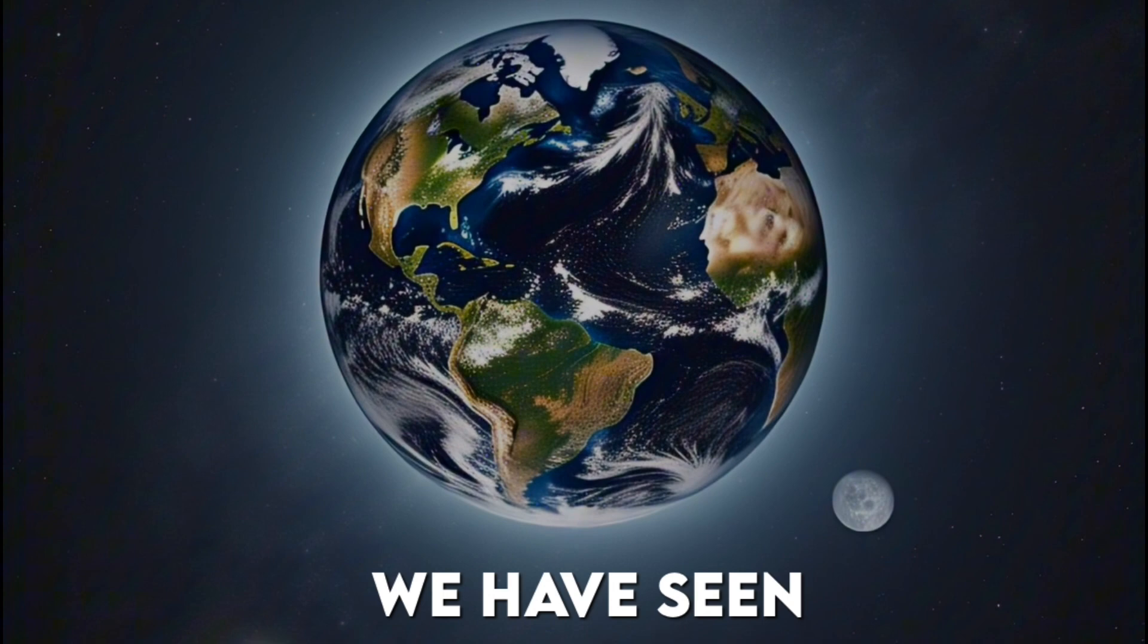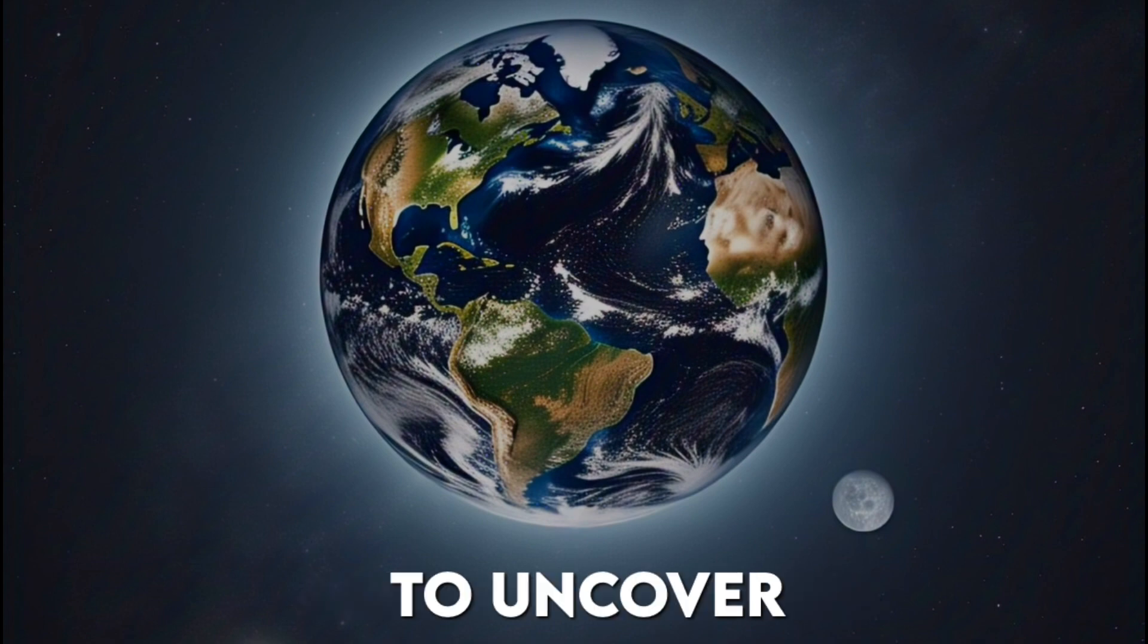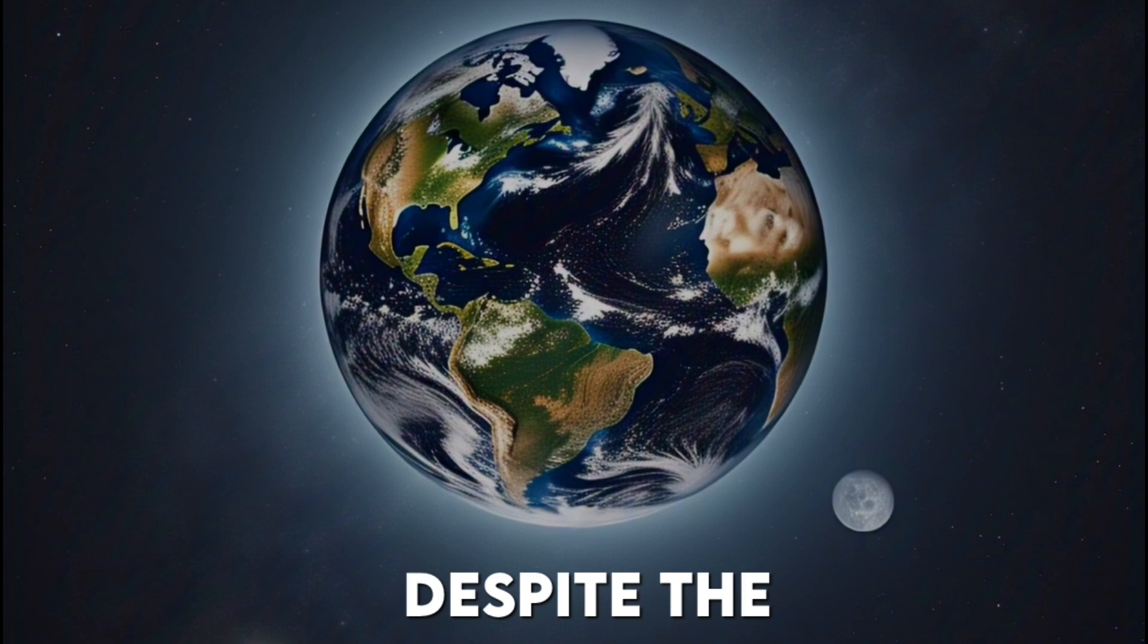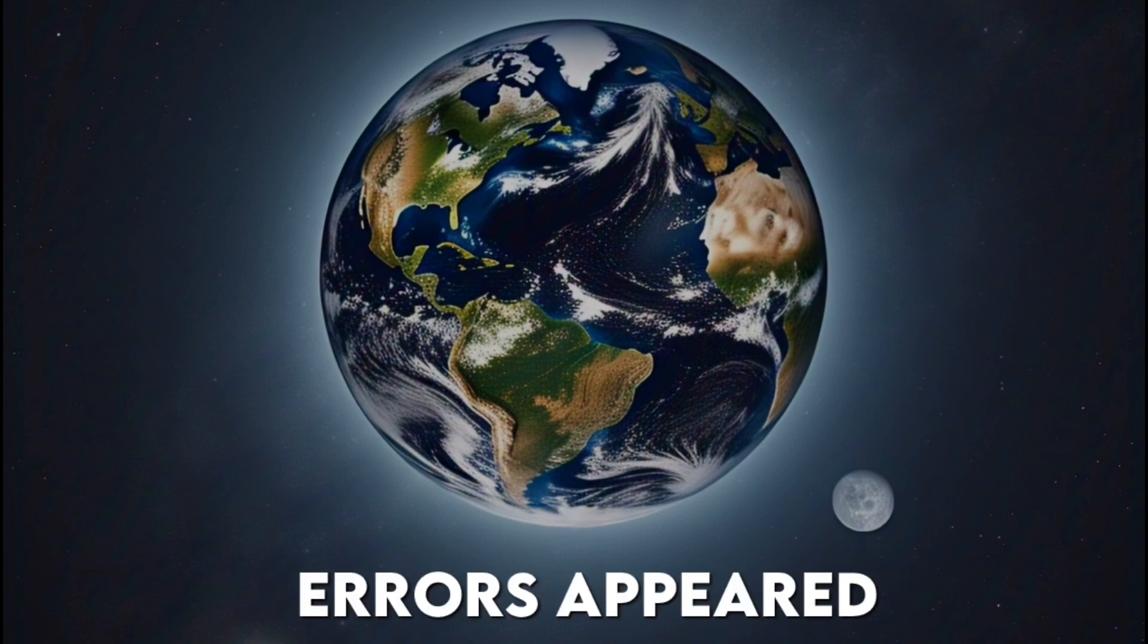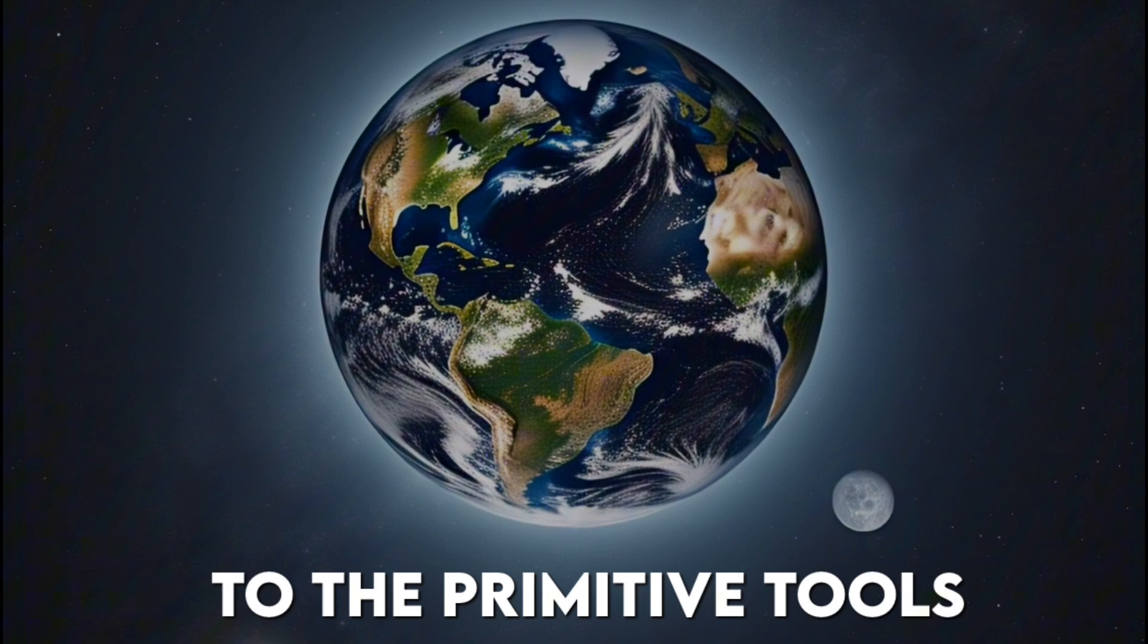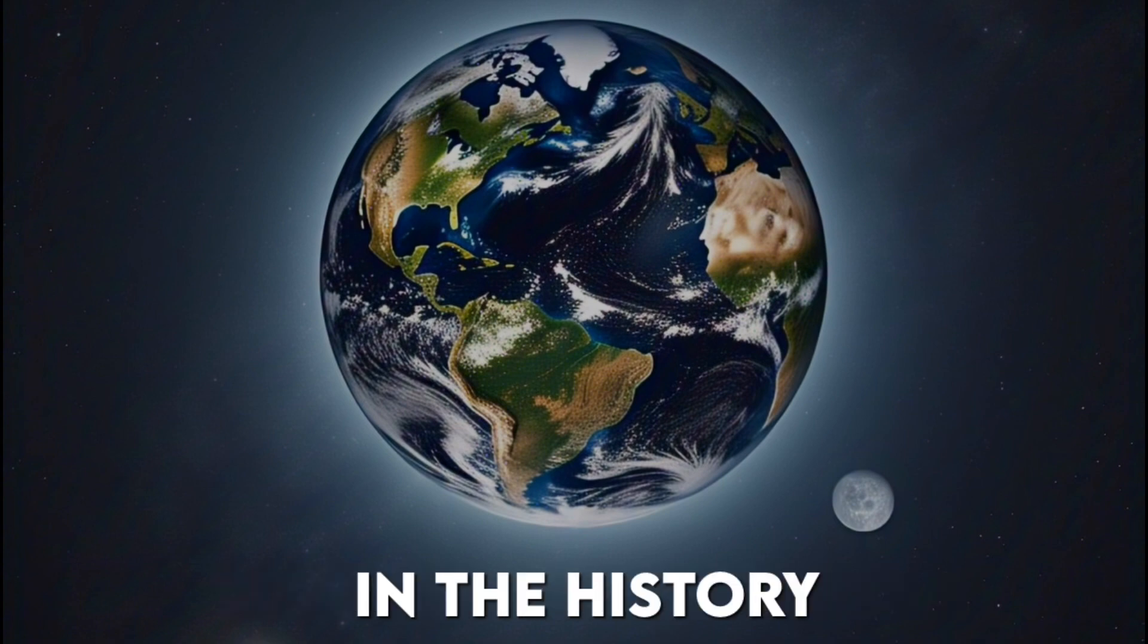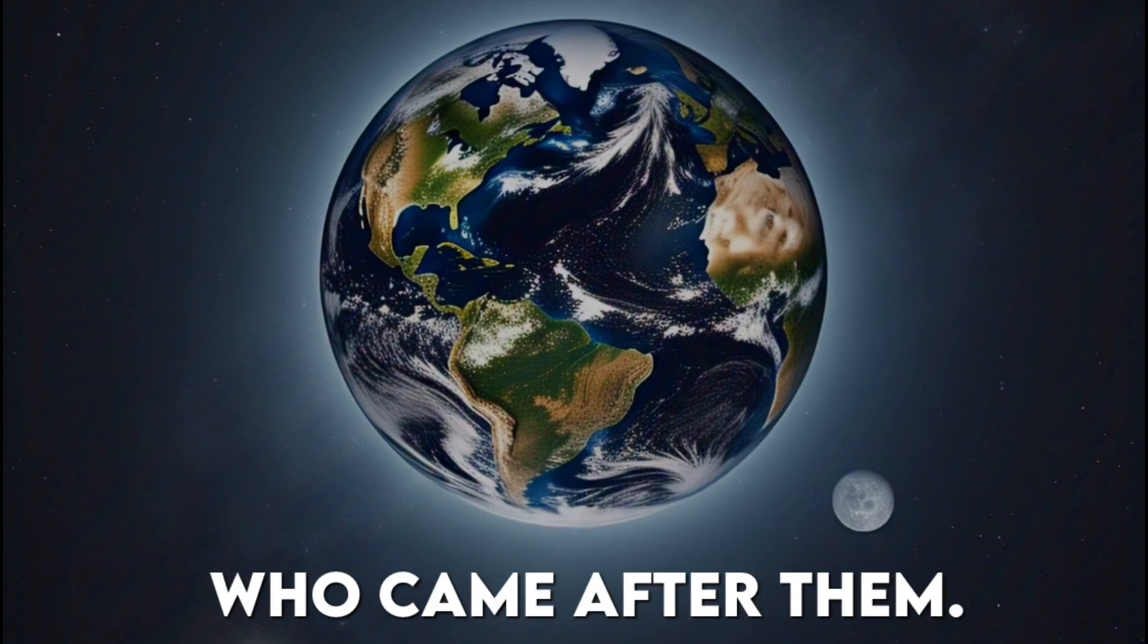Thus, we have seen how ancient scientists did not rely on mere speculation but used observation, experimentation, and mathematics to uncover the secrets of the universe. From Pythagoras to Aristotle, and from Eratosthenes to Aristarchus, each of them contributed in different ways to proving the Earth's sphericity, despite the challenges and objections they faced. And although some errors appeared in their calculations due to the primitive tools of their time, these discoveries were a great leap in the history of science and paved the way for the scientists who came after them.